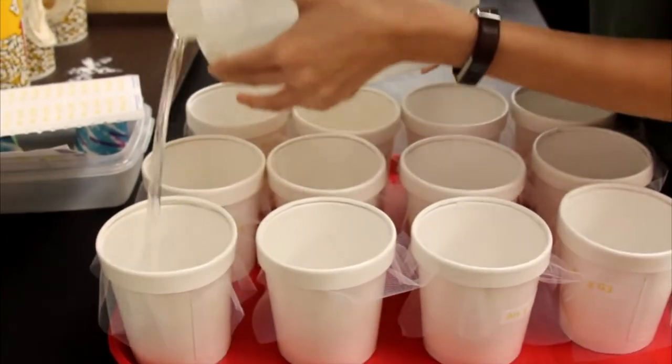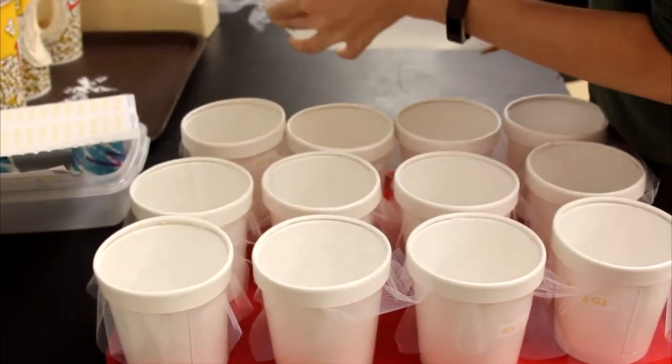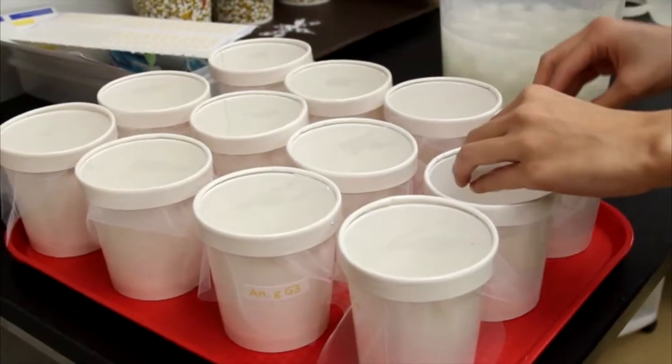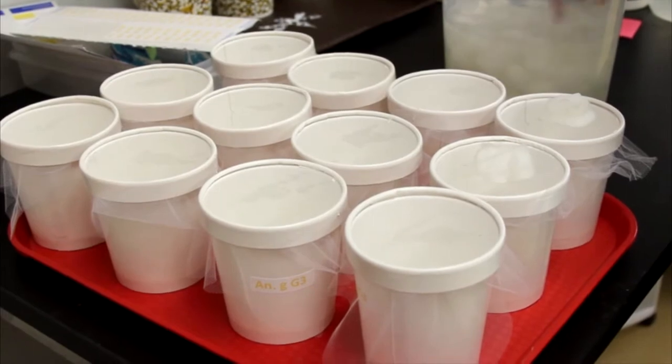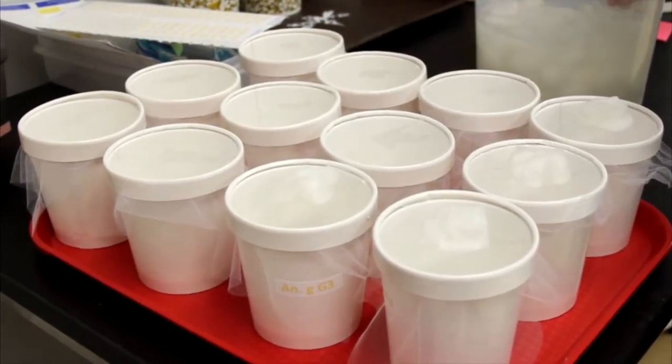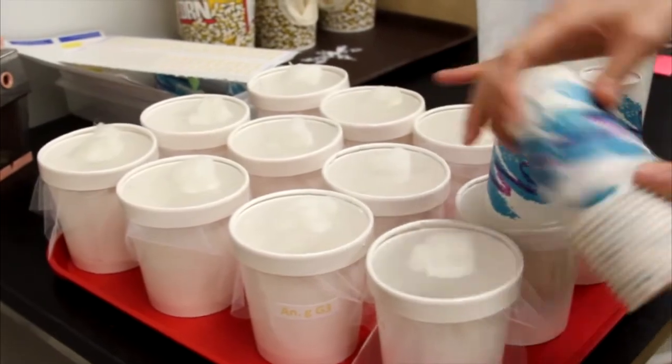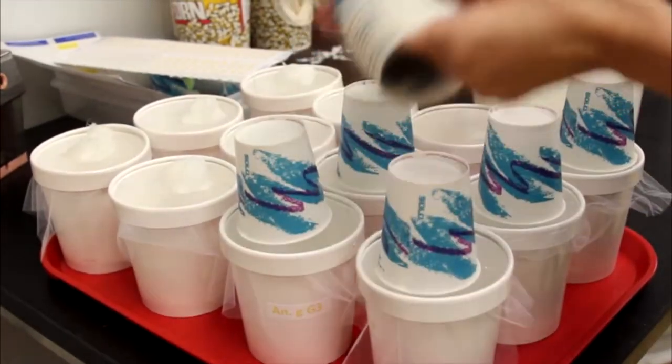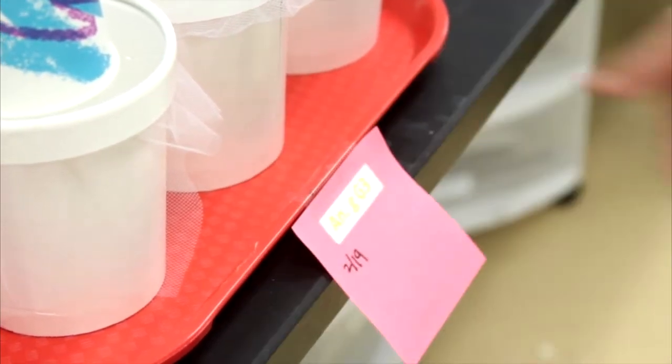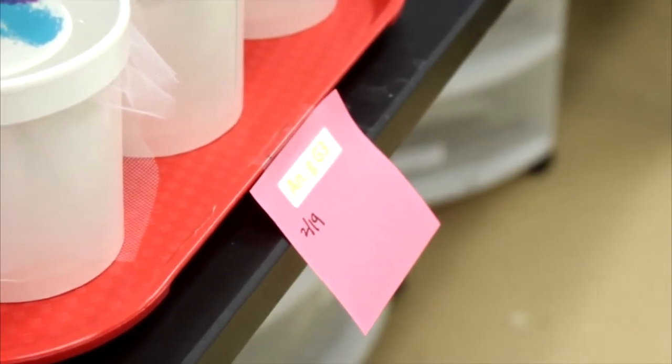Pour in half an inch of DI water. Place a damp cotton ball with a 0.3 molar sugar water solution on top and cover the cotton ball with a cup to prevent it from drying out. Add a label with the date on the tray. The water can be poured off after two days when all the mosquitoes have emerged.